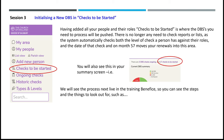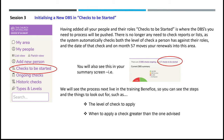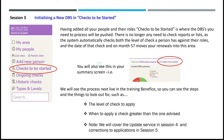You will see the process live in the training benefits, so you'll see the steps and things to look out for, such as the level of check to apply and when to apply a check greater than the one advised. Note that we will cover the Update Service in Session 4, and corrections to applications in Session 5.